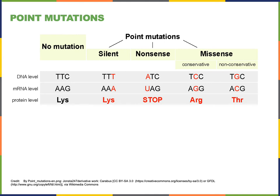The overall structure of the polypeptide as it folds will be very similar, and so the function of the protein resulting from a conservative missense mutation will either not be affected at all or will only have a minor effect. A non-conservative missense mutation will replace an amino acid with a different amino acid that will have a significant effect on the structure and function of the resulting protein. In the example shown, threonine replaces lysine, and threonine is not a positively charged amino acid, therefore the resulting structure of the protein would change and the protein's function would likely be significantly disrupted.